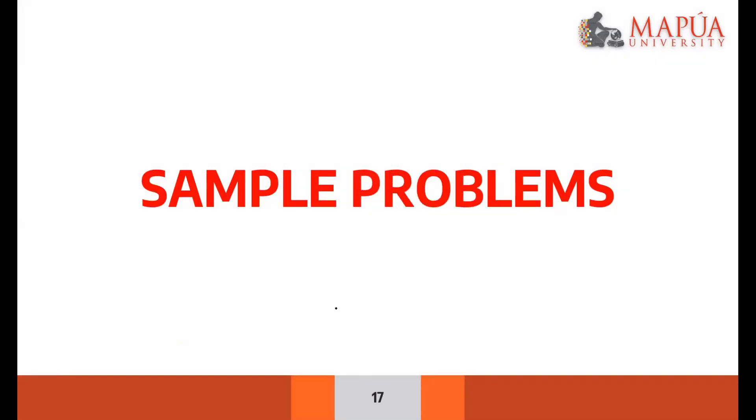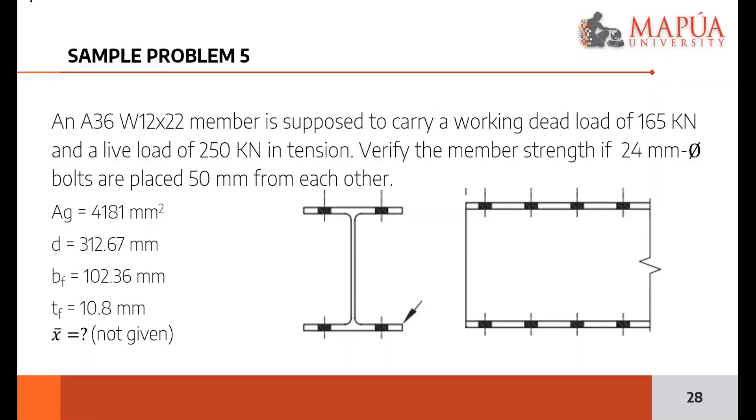Okay, so let's move into the sample problems. Let's proceed to the next sample problem, number five. In this case, we have a wide flange section, 12 by 22, A36 steel, carrying a working dead and live load given. Working means service loads, so unfactored loads in tension.